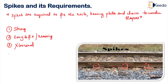The fourth requirement is it should be cheap — the initial cost and the maintenance cost should also be as low as possible. So these are the certain requirements of spikes. Now in Indian railways, normally there are four types of spikes available. Let's discuss them one by one.